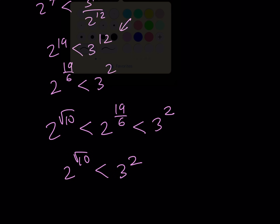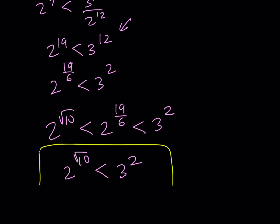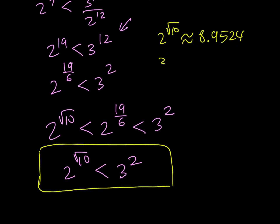Let me give you a numerical value so you can see what the numbers look like. 2 to the power of square root of 10 is approximately 8.9524, and as you know 3 to the second power is — not approximately — exactly equal to 9. Numerically you can see it too, of course we're not allowed to use a calculator, we had to use some algebra, but that's what they are.